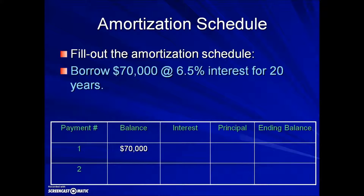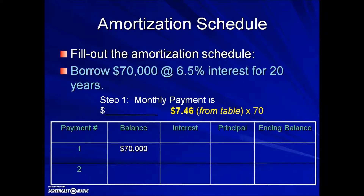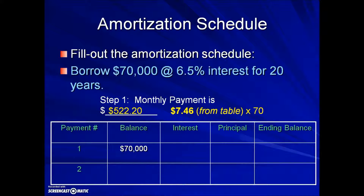Here's another example. Here we're borrowing $70,000 at 6.5% interest for 20 years. To start an amortization schedule we begin with finding the monthly payment. Using the loan table, we look up 6.5% along with 20 years, which is a value of 7.46, multiplying it by 70 because we're borrowing $70,000 compared to the $1,000 in the table. That results in a monthly payment throughout the 20 years of $522.20.